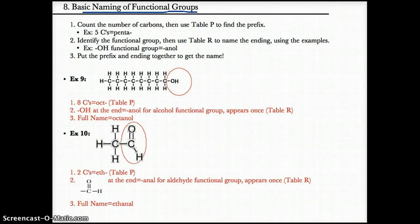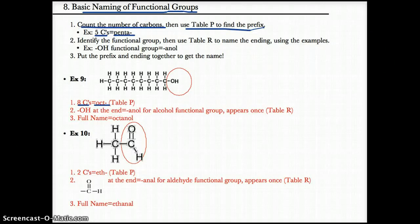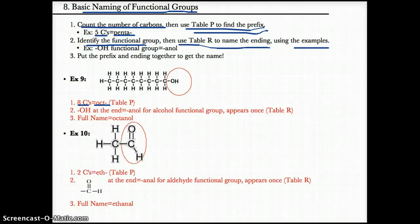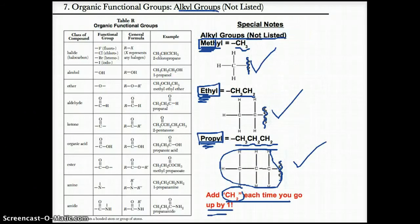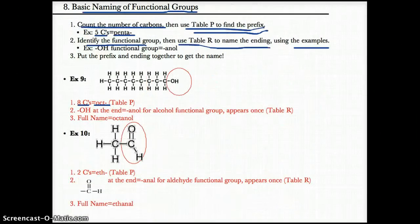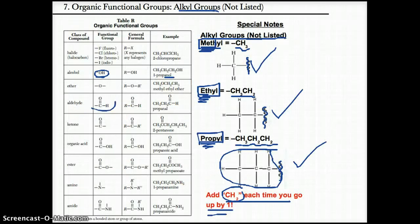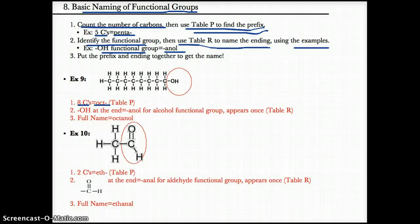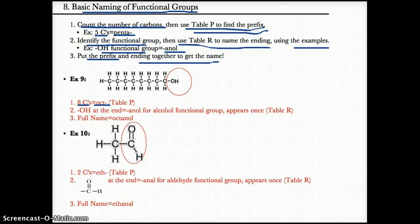Now let's talk about how to name functional groups and organic classes. Step one: count the number of carbons in the main chain and use table P to find the prefix — for example, five carbons is 'penta', eight carbons is 'octa'. Step two: identify the functional group by circling the non-hydrocarbon group, then use table R to name the ending. For example, OH gives the ending '-anol'. Then put the prefix and ending together to get the full name — five carbons with OH would be 'pentanol'.